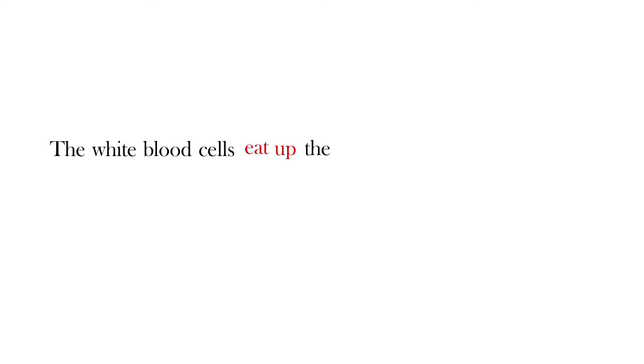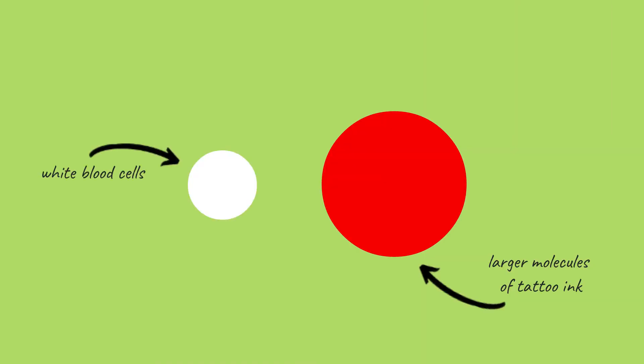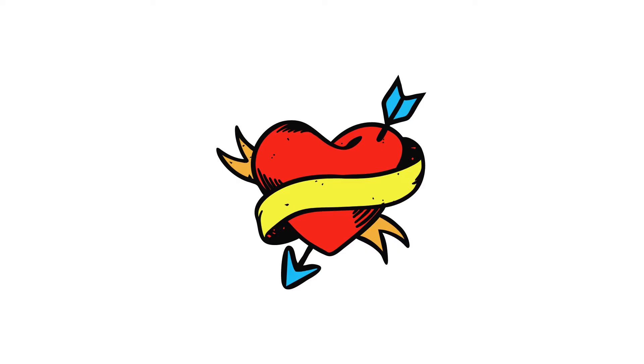The white blood cells eat up the ink particles and carry them to the liver for disposal. Most ink particles however are so big that the smaller white blood cells can't engulf them. This results in the creation of a permanent tattoo.